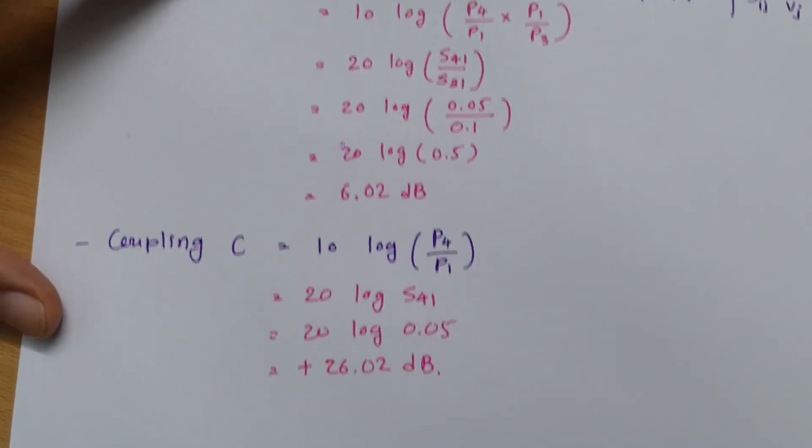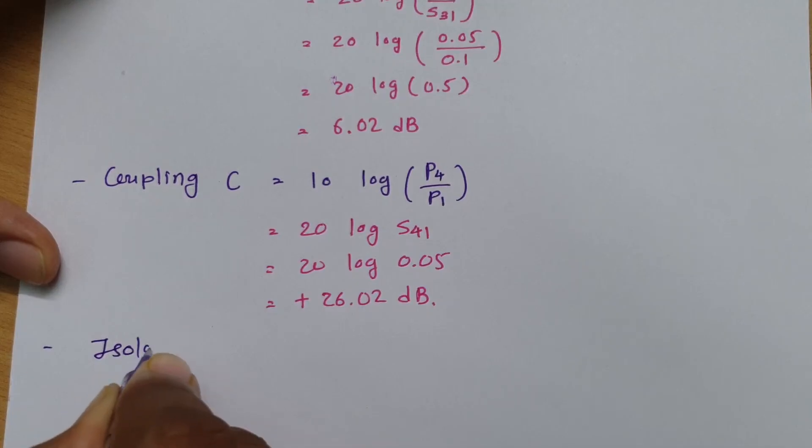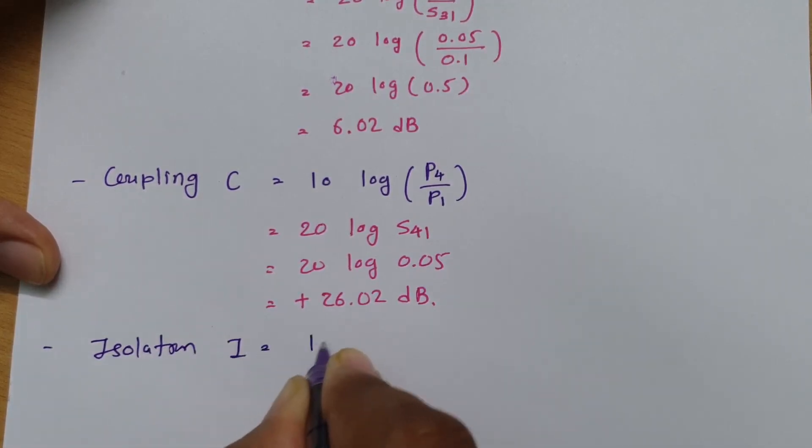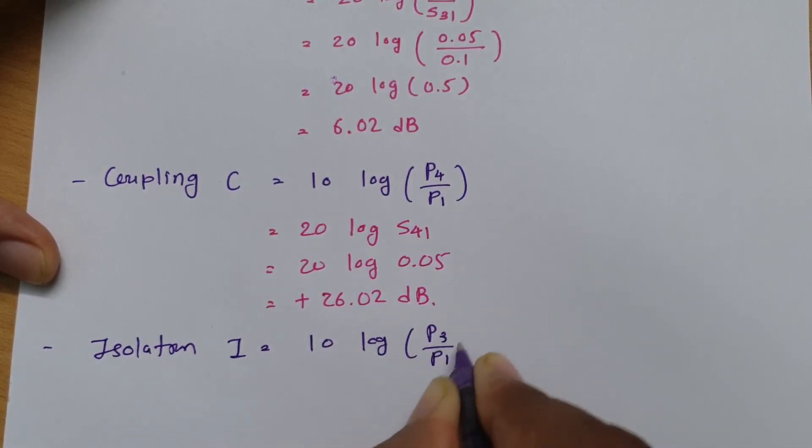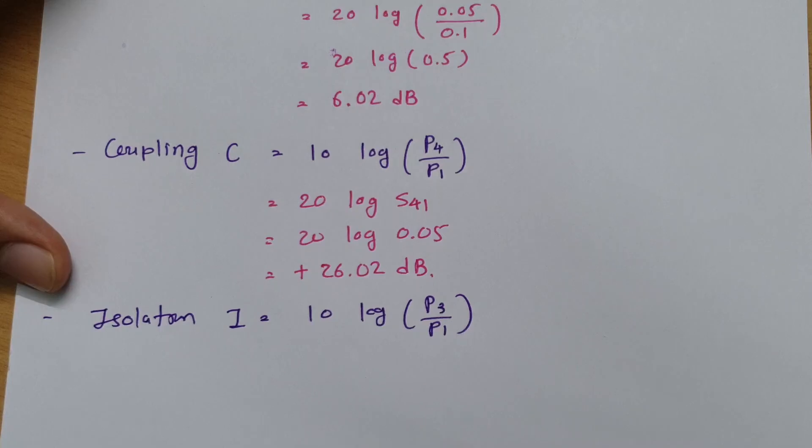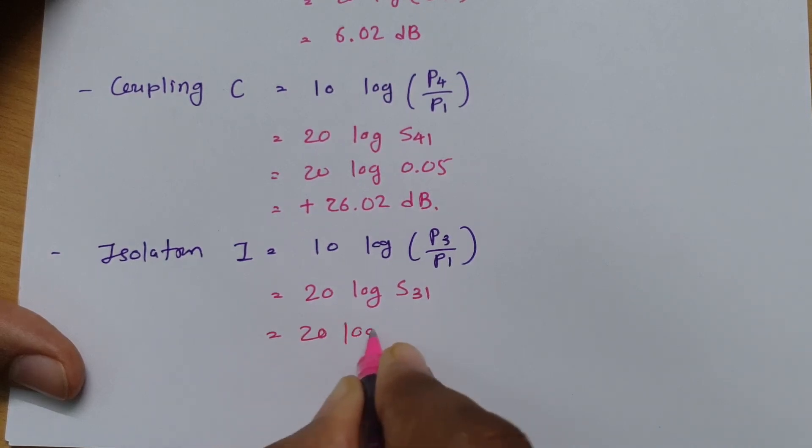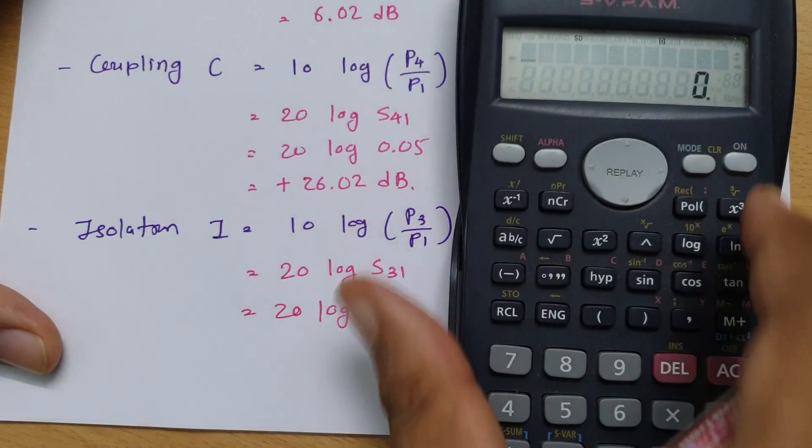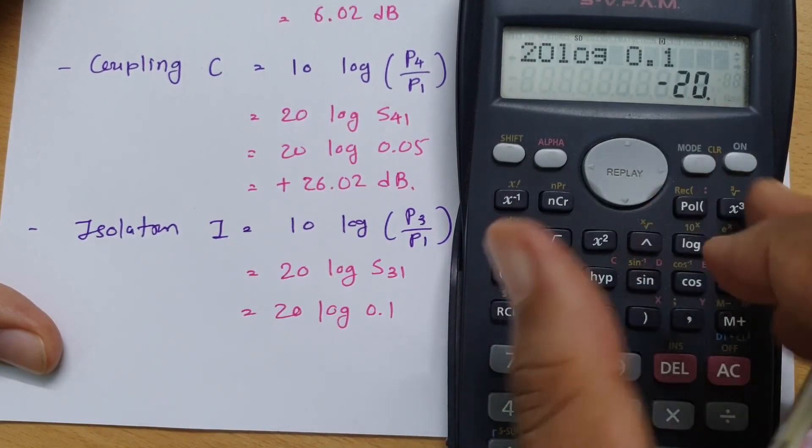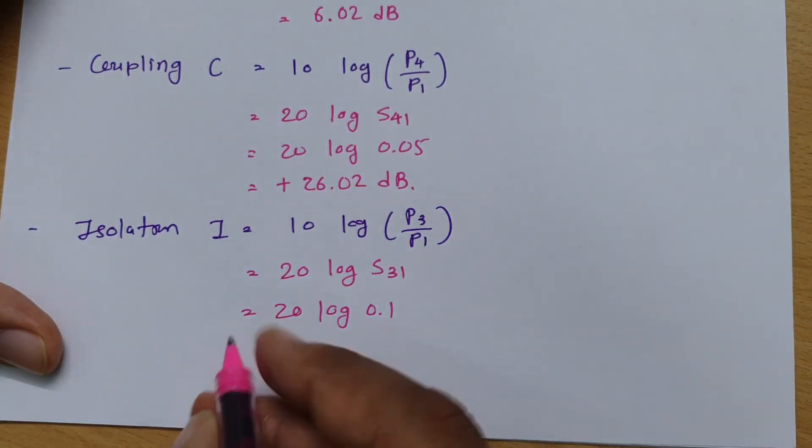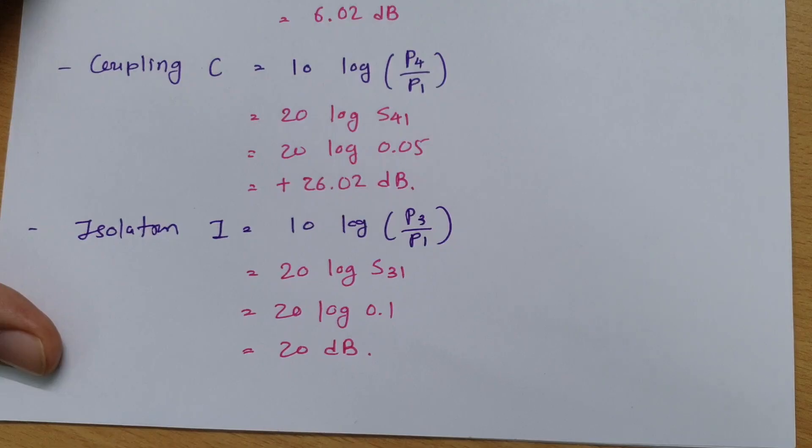If I write that in terms of scattering matrix data, it will be 20 log of S31. And S31 you can see is 0.1. So if I place it over here, 20 log of 0.1, that is minus 20 dB. So it is 20 dB.